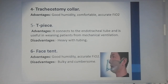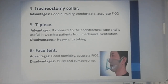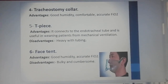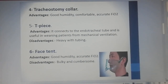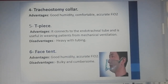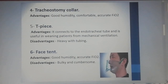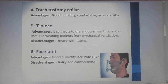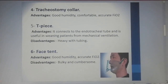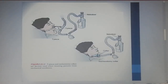The tracheostomy collar's advantages include good humidity, comfort, and accurate FiO2. The T-piece is connected to the endotracheal tube and is useful in weaning patients from mechanical ventilation; its disadvantage is heavy weight with the tubing. The face tent provides good humidity and accurate FiO2, but is bulky and cumbersome. This picture describes the T-piece and collar.